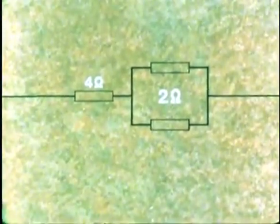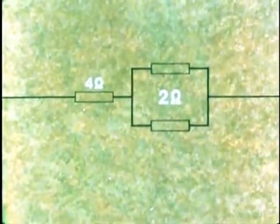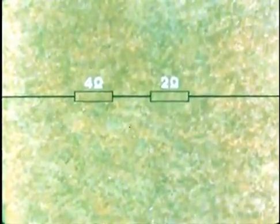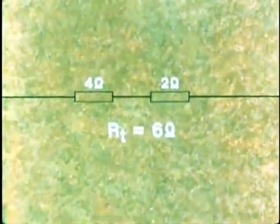Now we can think of the circuit as a simple series circuit with 4 ohms and 2 ohms resistance. So RT equals 6 ohms.